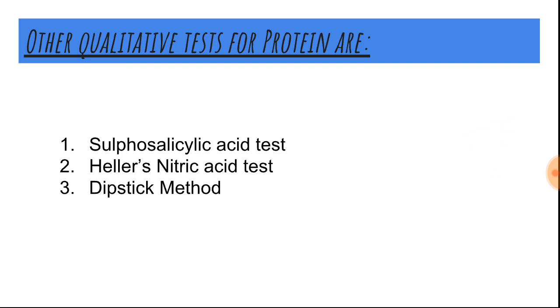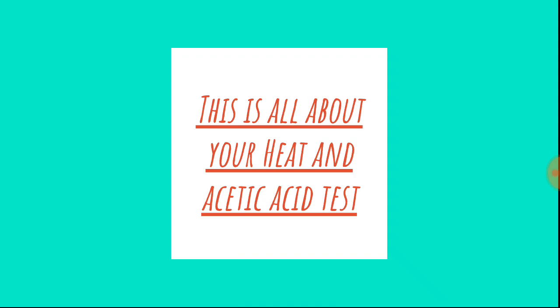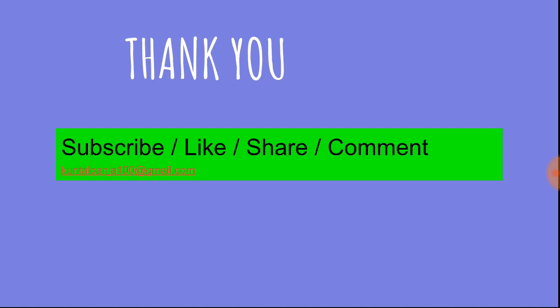Other qualitative tests done in laboratories include the sulfosalicylic acid test, Heller's nitric acid test, and the dipstick method, which is commercially available and most commonly done in many laboratories. This is all about the heat and acetic acid test. I hope you understand all the points and enjoy our video. Please subscribe to our channel, like our videos, share, and comment in the comment section. If you have any queries, email me at kuntalpanjah100@gmail.com. Thank you.